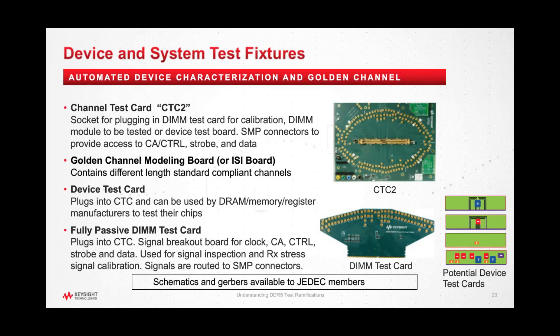Finally, there is the passive DIMM test card, which plugs into a DIMM socket, or the CTC DIMM socket. It provides signal breakout for clock, command address, control, strobe, and data. This can be used for signal inspection, and it may also be used as an alternative calibration point for receiver stress signals. These signals are routed from the DIMM edge connector to the SMP connectors.